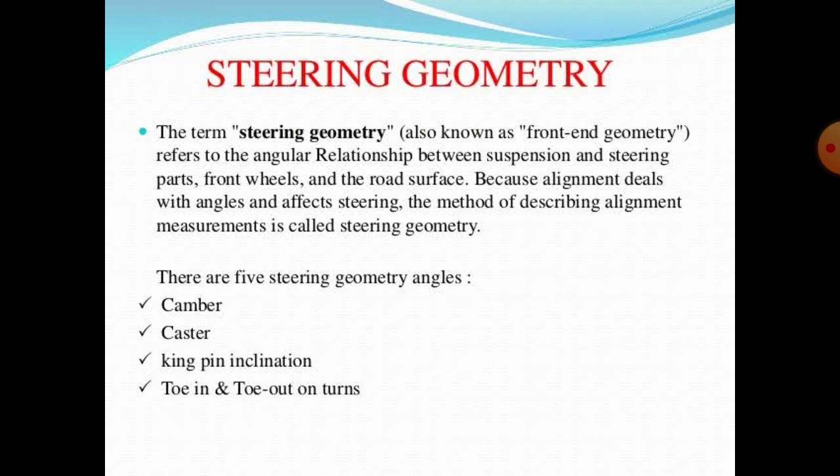In steering geometry, there are five steering geometry angles: camber angle, caster angle, kingpin inclination, toe-in, and toe-out. These are the five steering geometry angles of your vehicle.